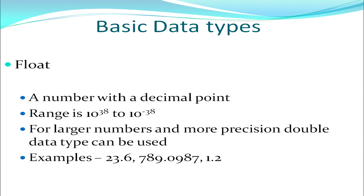Next, we move on to float data type. It might be a situation that I want to store decimal numbers. If I want to store decimal numbers, then I have to use a float data type. The range of the float is 10 raised to power 38 to 10 raised to power minus 38. As seen with integers, floats can also store both negative and positive numbers. If I want to use a larger decimal point number with more precision, then we use a double data type. The examples of floats are shown on the screen.